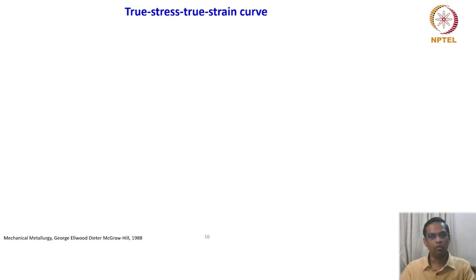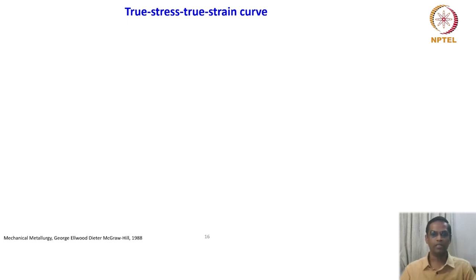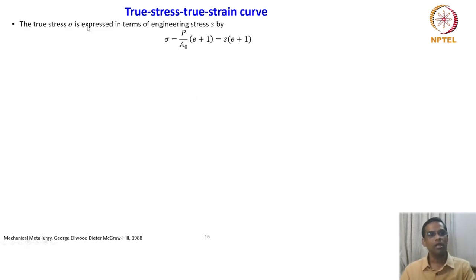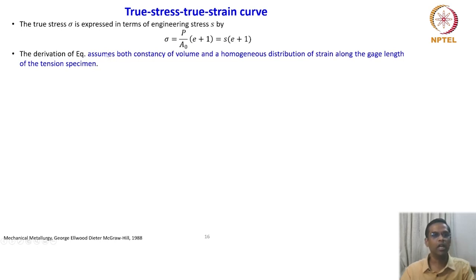Now we will talk about the true stress–true strain curve. Why do we need it? Engineering stress is load divided by the original area of cross-section. True stress, on the other hand, is load divided by the instantaneous area of cross-section. This means true stress exhibits a more complete characteristic of the deformation behavior of the material. The true stress sigma can be expressed in terms of engineering stress from the constancy of volume: true stress equals engineering stress times (engineering strain + 1). The derivation assumes both constancy of volume and homogeneous distribution of strain along the gauge length.